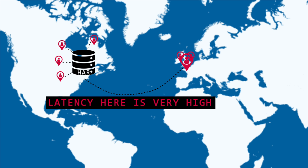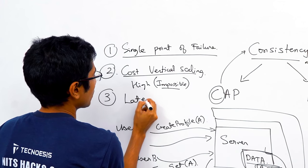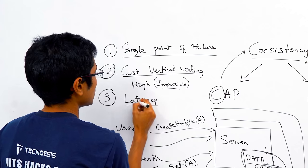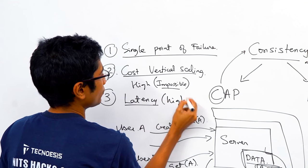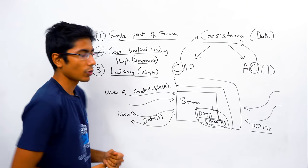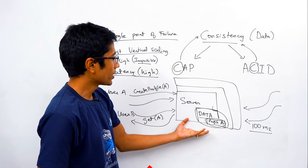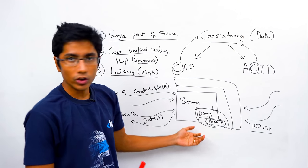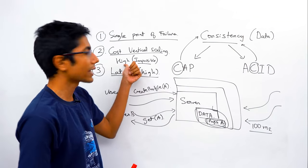The latency here is really high — let's say about 100 milliseconds — and you want to bring it down to 10 milliseconds. It's impossible, because the time it takes to hop from the Oxford server through routers and finally hit the Harvard server is inherent network latency. So how do we mitigate these problems with a single server? We can't — we've seen there's a vertical scaling limit.